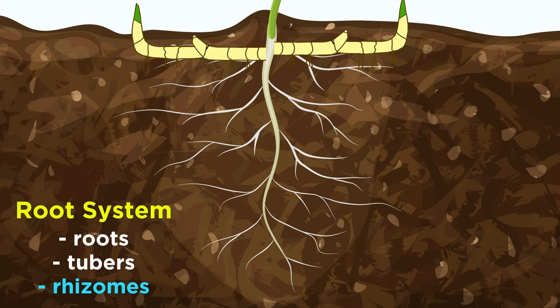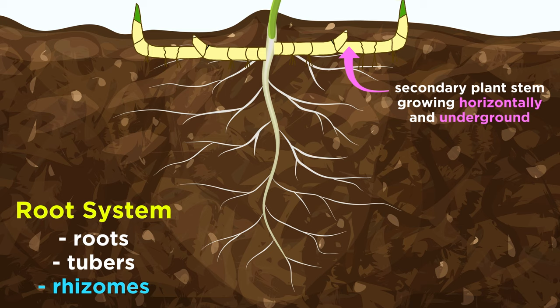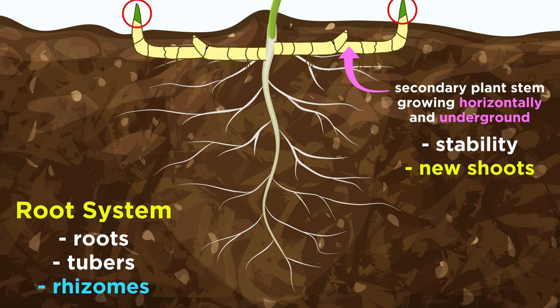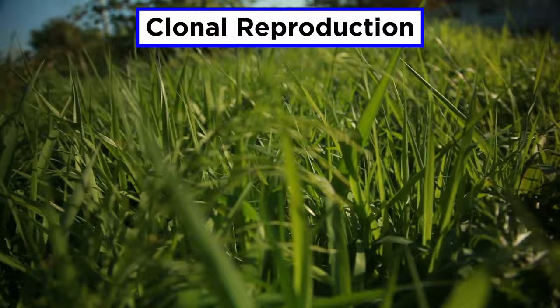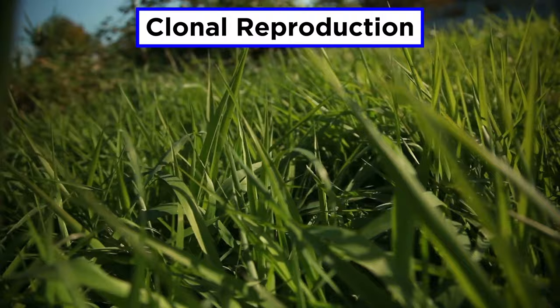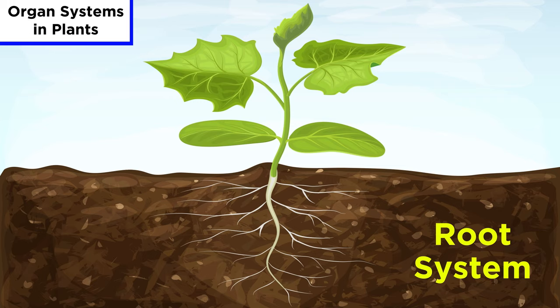The last part of the root organ system in plants is the rhizome. Just like tubers, not all plants have rhizomes, but the ones that do have an advantage, because rhizomes can do multiple beneficial things for a plant. A rhizome is basically a secondary plant stem that grows out horizontally under the ground. This provides stability to the plant, especially if the rhizome also grows small supplemental roots. Rhizomes can also grow new plant shoots up out of the soil, so a rhizome can allow a plant to create clones of itself and grow over a much wider area, potentially outcompeting other plants trying to grow in the same space. This strategy is called clonal reproduction, and is common in certain types of plants like grasses.